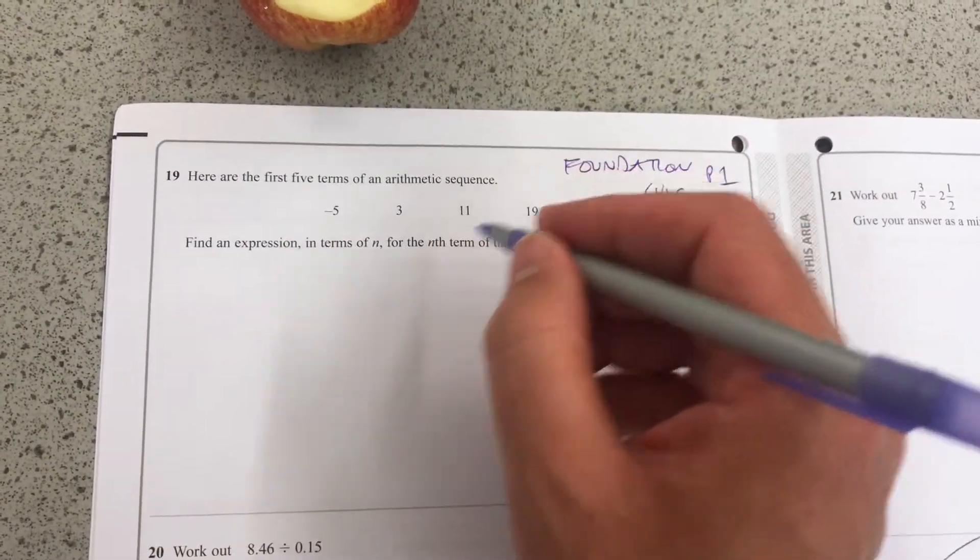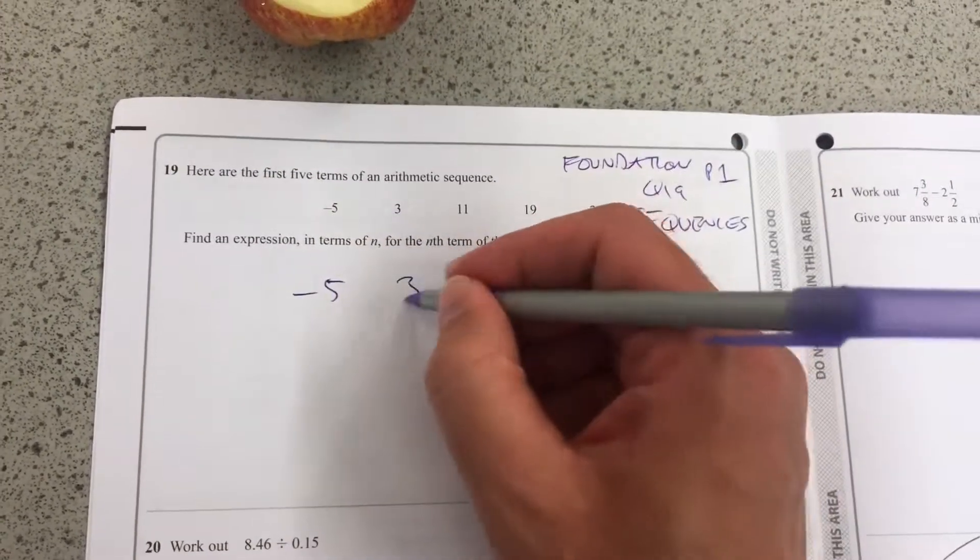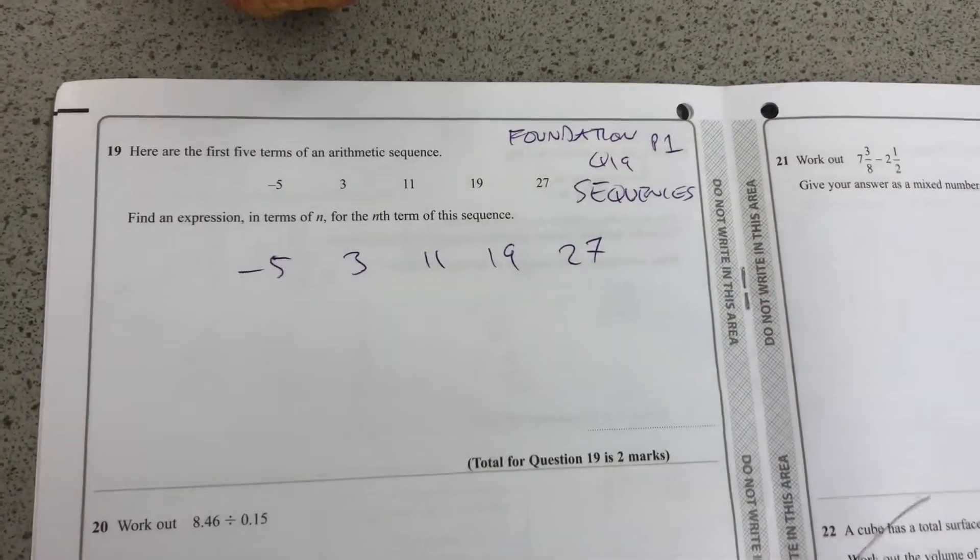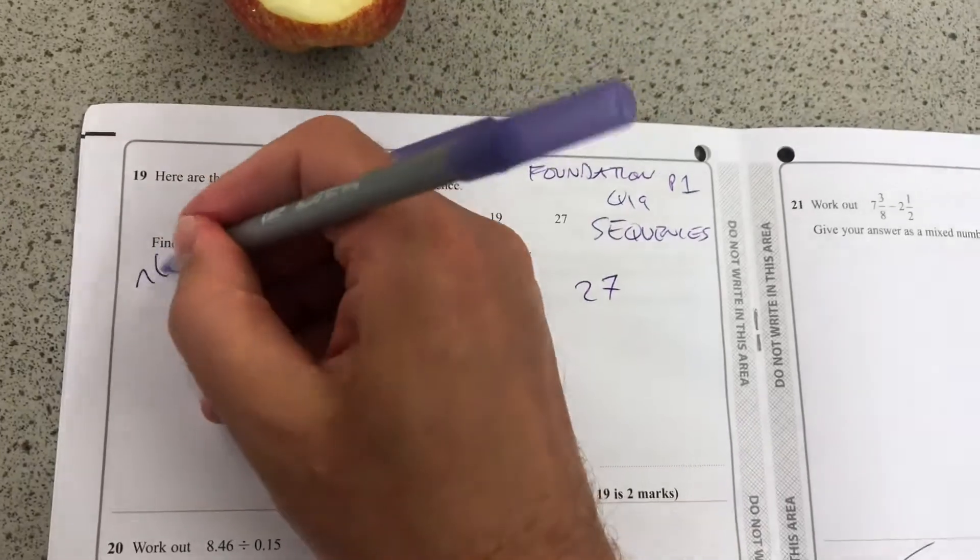So here's an arithmetic sequence: minus 5, 3, 11, 19, 27. And we're going to find an expression in terms of n, so it's nth term sequences.